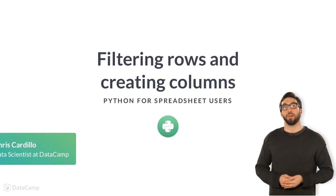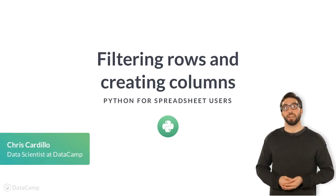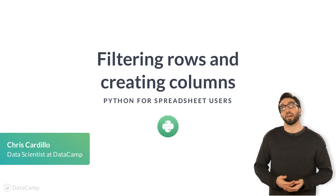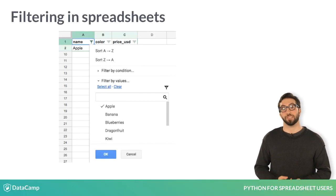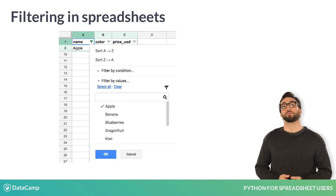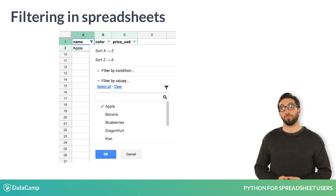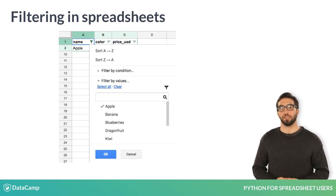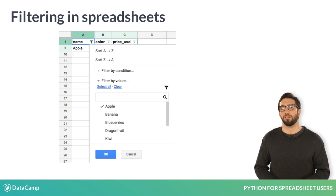Oftentimes, you may want to filter your data for a specific observation or set of observations. In spreadsheets, you are most likely familiar with the filtering functionality, where a dropdown menu allows you to reduce your data by ticking a box. How do we recreate this functionality in Python?